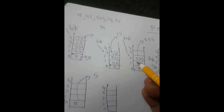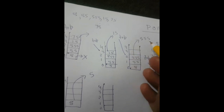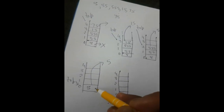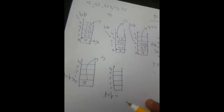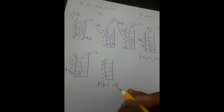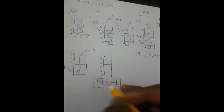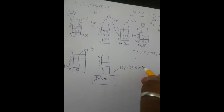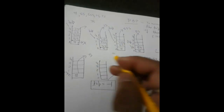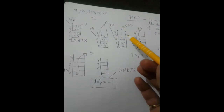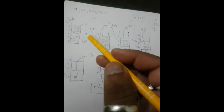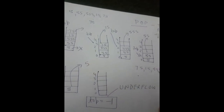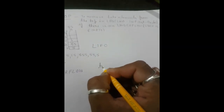After popping 75, top is 3. Next, 15 is taken out and top becomes 2. Then 555 is popped and top becomes 1. Then 55 is popped and top becomes 0. After 5 is taken out, top's value becomes minus 1 — the stack is empty, which is the underflow condition.